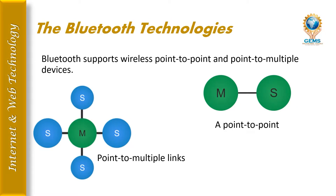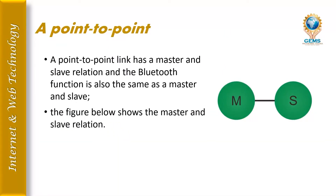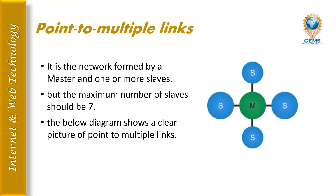Bluetooth technologies support wireless point-to-point and point-to-multipoint connections. In point-to-point, there is a master (M) and slave (S) relationship. Point-to-multipoint is a network formed by one master and one or more slaves, with a maximum of 7 slaves. The diagram shows a clear picture of point-to-multipoint links.